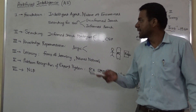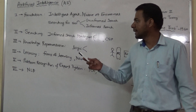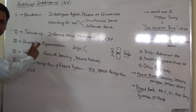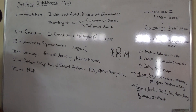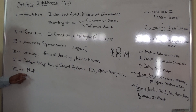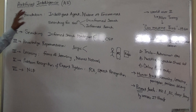There are six units. Unit one is Formation. Unit two is Searching. Unit three is Knowledge Representation. Unit four is Learning. Unit five is Pattern Recognition and Expert Systems. And unit six is Natural Language Processing.